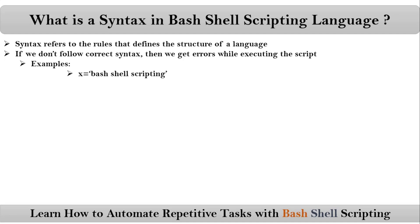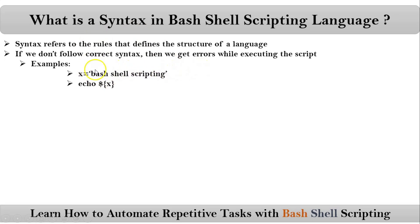We know two syntaxes: one is how to define a variable and how to display a variable value. Suppose if you want to define any variable with some value, you have to follow some rules. We know that on either side of the equal symbol you should not have any spaces, and the variable name should have only alphabets (lower or upper), numbers 0 to 9, and underscore. Whenever your string has spaces, it must be within quotation marks.